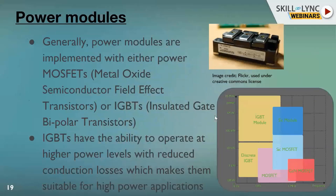Let's have a detailed look into the critical components. Power modules form the main power board of your inverter and are typically implemented either with MOSFETs — field effect transistors — or IGBTs — insulated gate bipolar transistors. Both these switches have their own characteristics and area of operation, and depending on the power and frequency your inverter operates at, you'll have to select either the MOSFET or the IGBT.